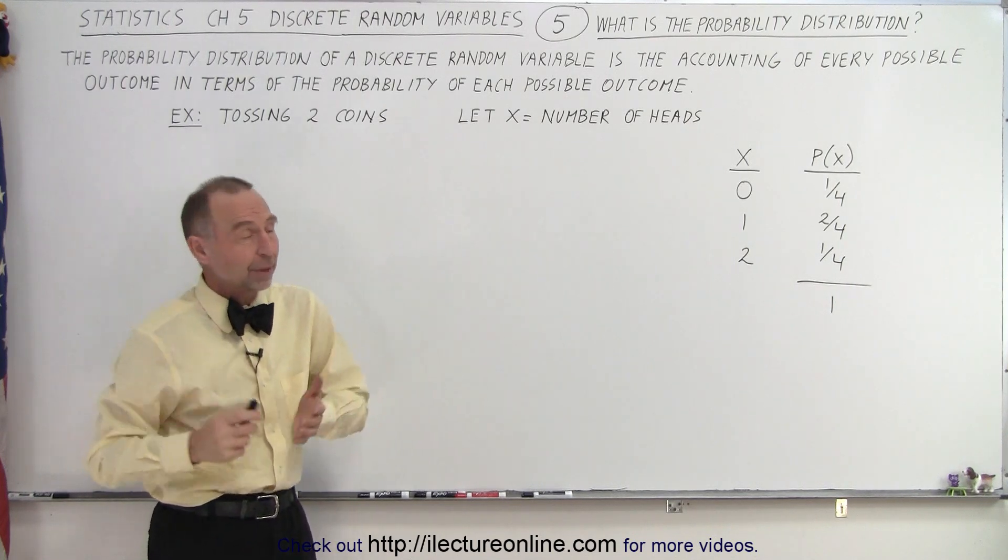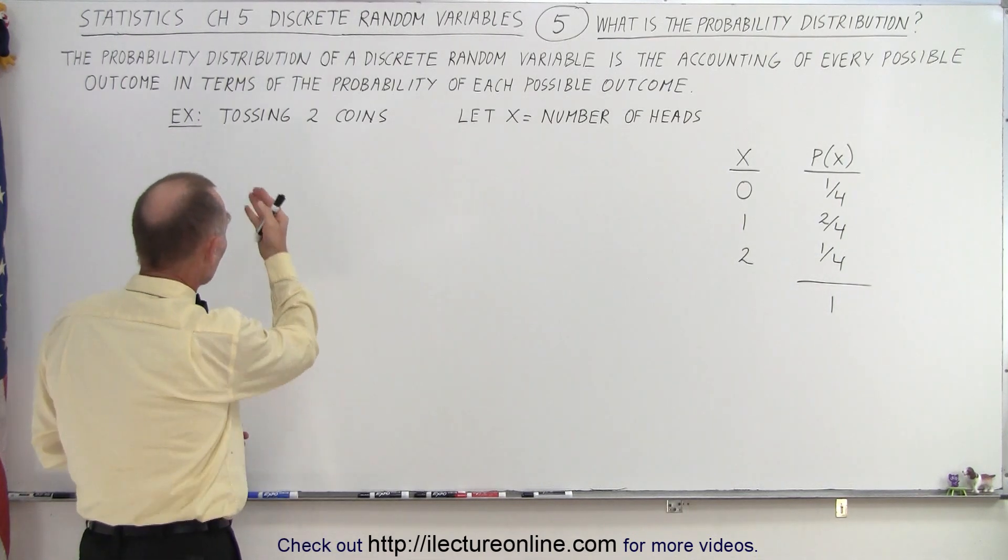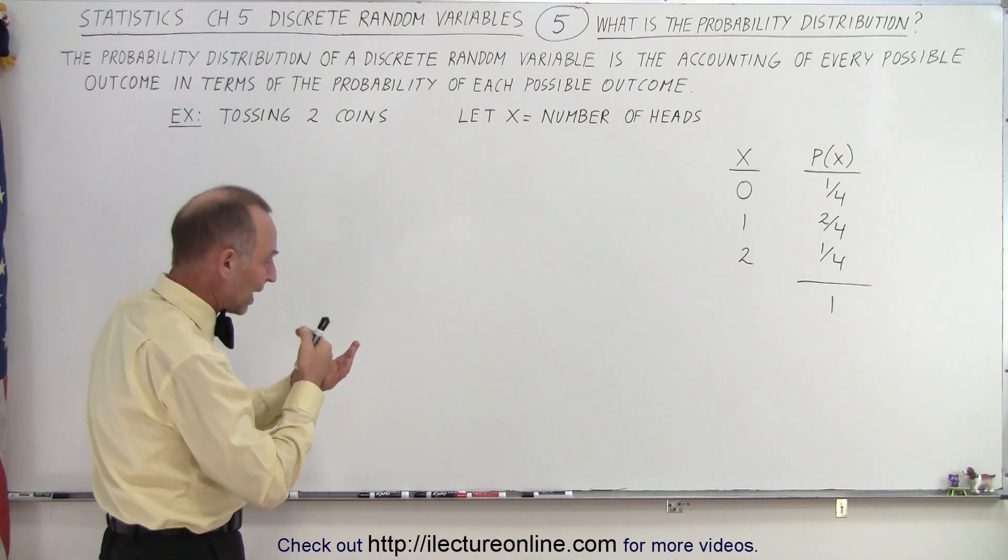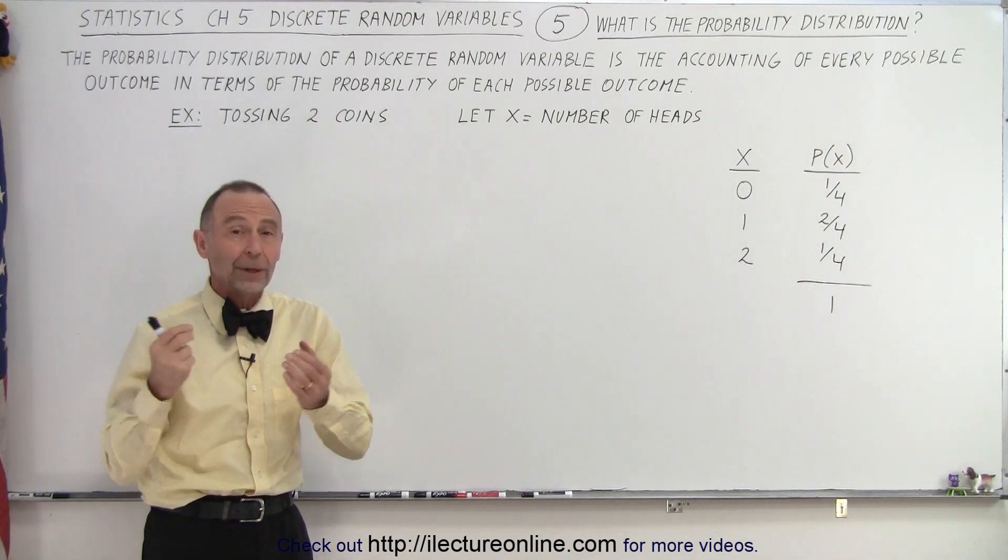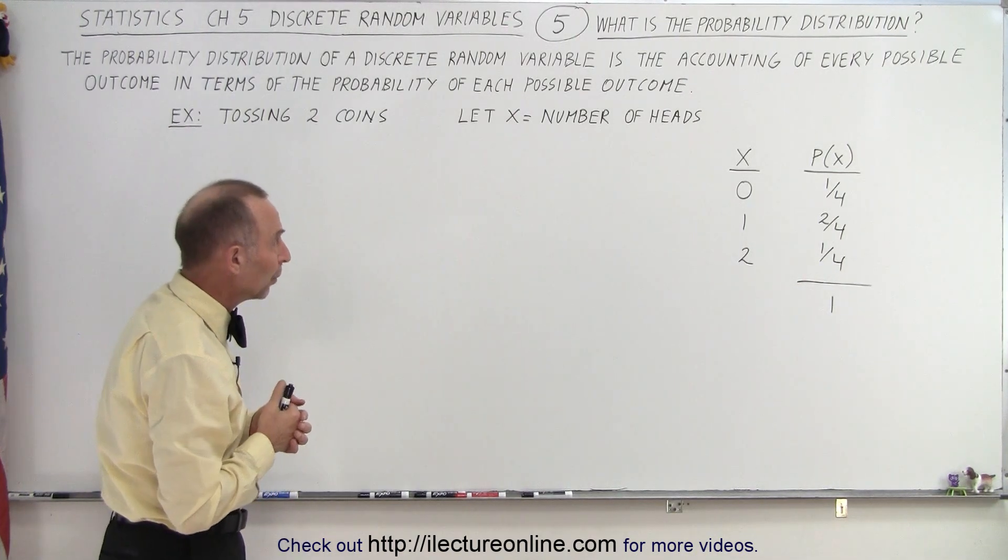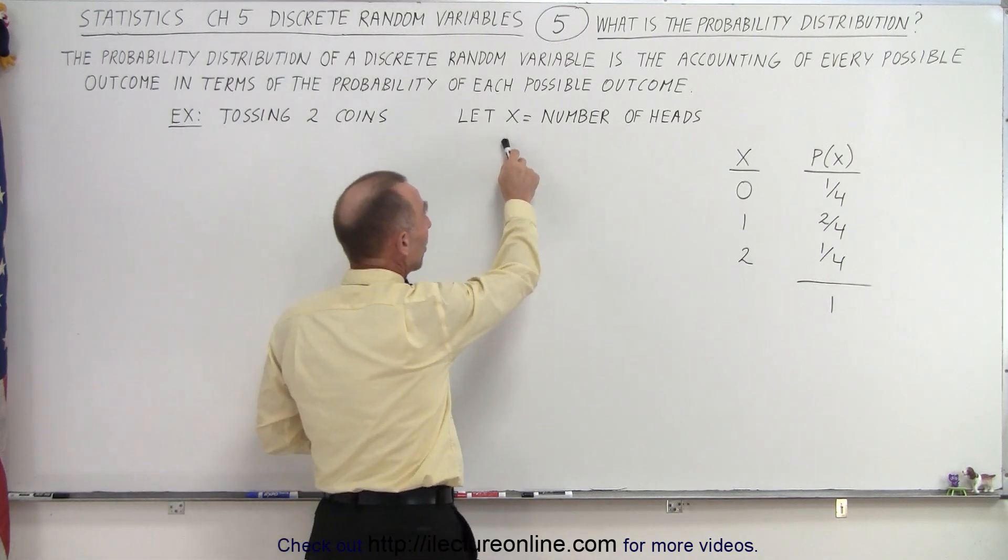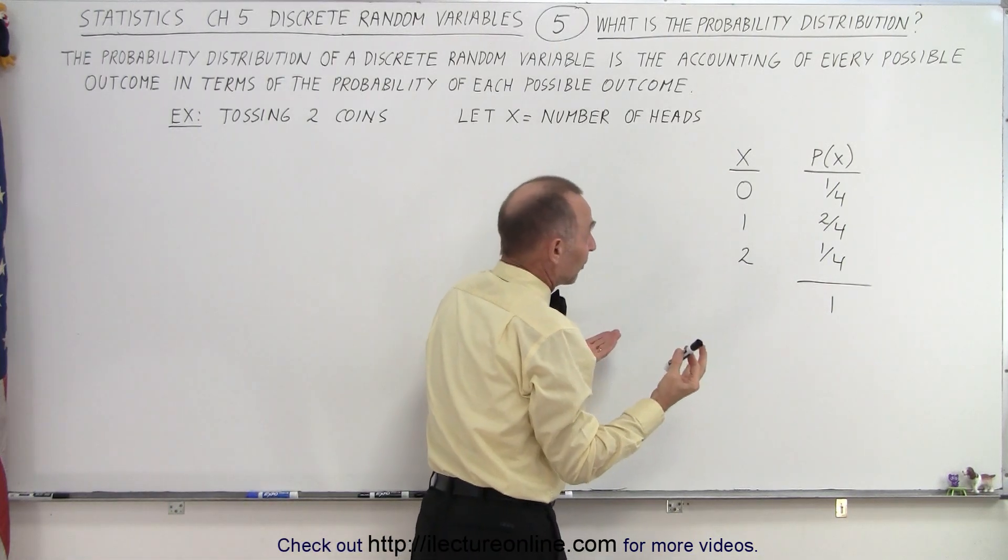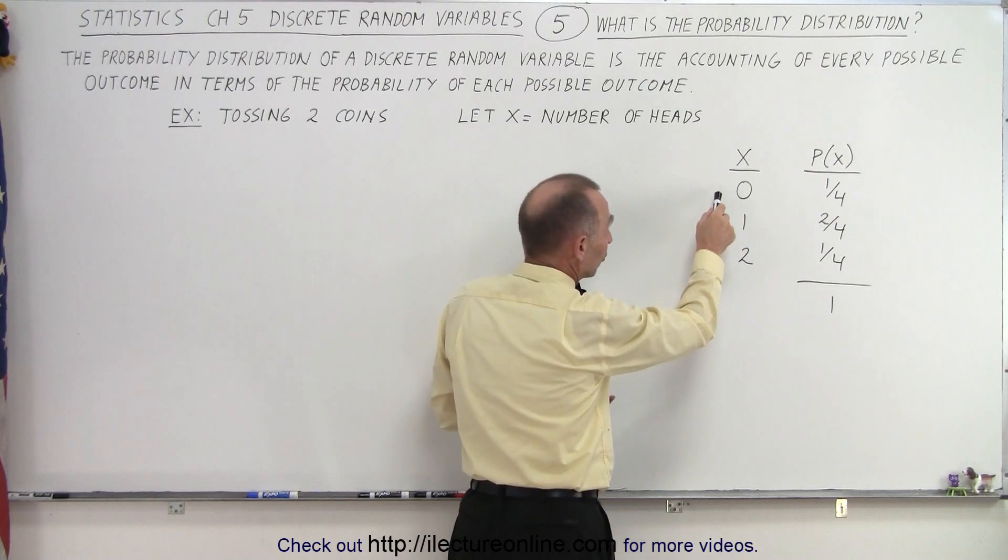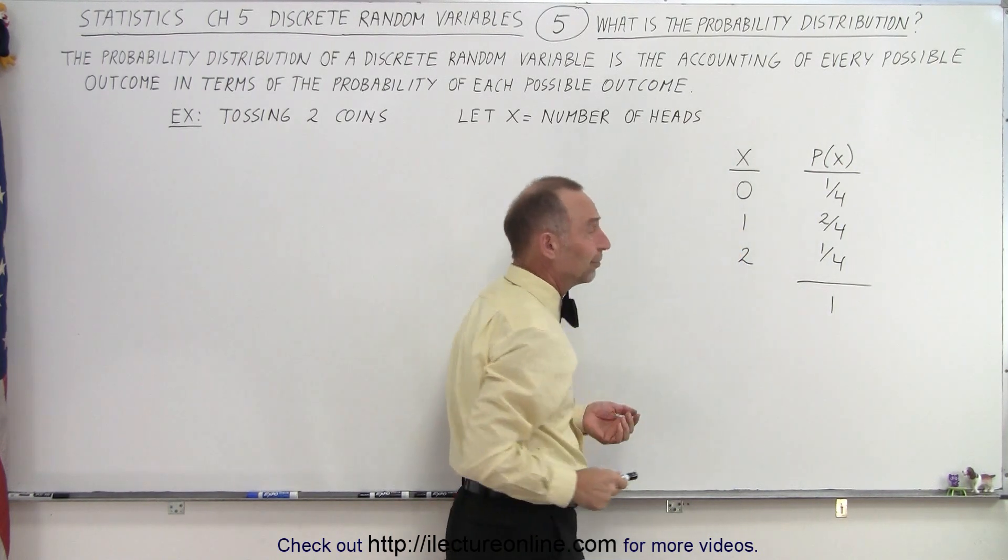So let's take a simple example. Let's say we're tossing two coins, and we want the random variable to be the number of times that we end up with heads. Well, x represents the number of heads, and so the possible outcomes are: zero heads, one head, or two heads.